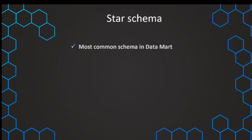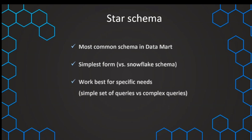To summarize, a star schema is the most common schema in a data mart because it combines both usability — user-friendliness — and high query performance. It is also the most simple form, especially compared to the snowflake schema which is a little more complex. A star schema is especially optimized if we have specific, defined needs — for example, visualizing profit by year or profit by categories without needing super complex queries. When we have those more simple and defined sets of queries and needs, we get the best performance and usability with our star schema, which is why it is the most common schema in our data mart.